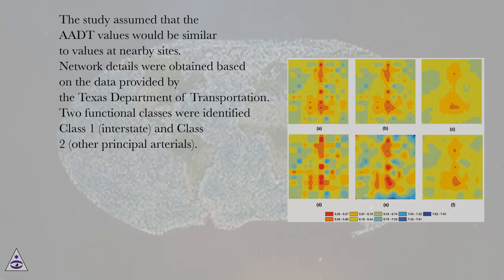The study assumed that the AADT values would be similar to values at nearby sites. Network details were obtained based on the data provided by the Texas Department of Transportation. Two functional classes were identified: Class I, Interstate, and Class II, Other Principal Arterials.